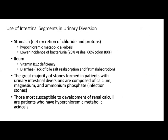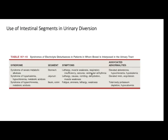At the end of the lecture, the use of intestinal segments for urinary diversion is mentioned. This Friday will cover operative techniques of cystectomy, ileal conduits, and other urinary diversions — cutaneous continent diversions and orthotopic diversions. For stomach use, complications include hyperchloremic metabolic alkalosis with lower incidence of bacteriuria. For ileum, similar to the colon, the problems are vitamin B12 deficiency and diarrhea. Stones are also a problem. There is a table in Campbell for electrolyte disturbances.